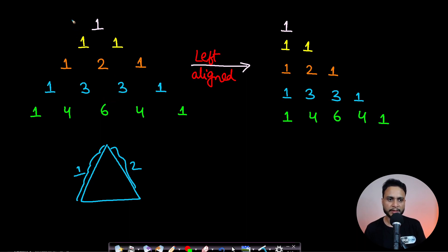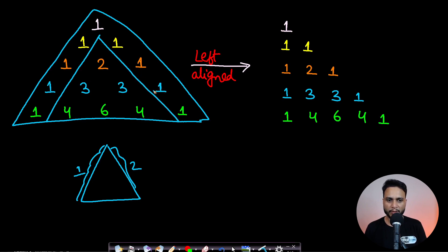I have already drawn a triangle. You can see this is a triangular format of numbers. All the boundary numbers—this is the left side and this is the right side of the boundary—all these boundary elements are already one. We can say the first row and second row are the base cases.